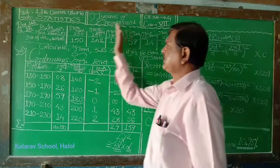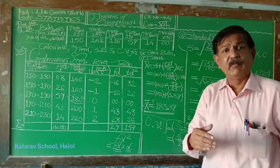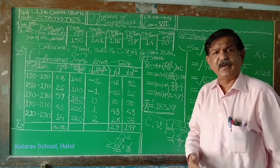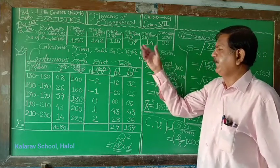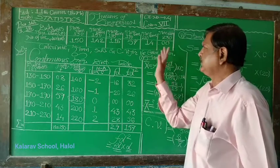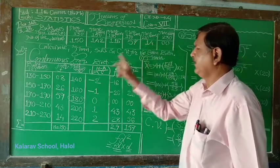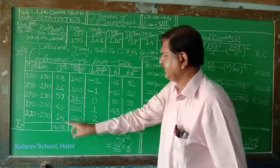As this is cumulative type frequency distribution, and moreover, more than type, greater than type frequency distribution, we have to compute the simple frequency from bottom to top. More than 230 is 0. More than 210, which is 210 to 230, frequency is 14 as it is.